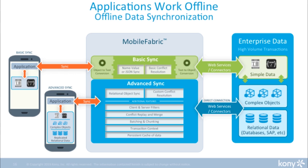So if you look at this diagram, basic synchronization will get you some simple data from the back end. Maybe there's some translation, because a lot of existing solutions only put name-value pairs or JSON objects on the device. But what our customers need is to get the same relational data model that's in the back end on the device, so that you have transactional context, you have object relationships, and you're changing the data on the device as close to what the back end expects as possible.